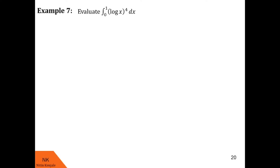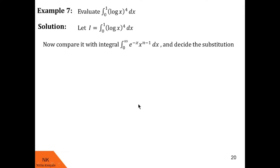Here we are asked to evaluate the integral of (log x)⁴ dx over the limit 0 to 1. First of all, we label this integral as i. Then we compare this integral with the definition of gamma of n, which is the integral of e^(-x) into x^(n-1) dx over the limit 0 to infinity. And we decide the required substitution which will transform this integral into this form.